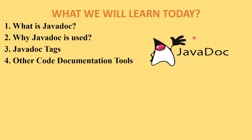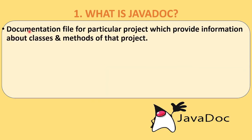Javadoc code documentation tool is used only in the Java programming language, to generate the Java documentation for Java code. Similarly, we have code documentation tools for other programming languages as well. So what is Javadoc? It is a documentation file for a particular project, which provides information about classes and methods of that project. Suppose you have created a Java project inside Eclipse or NetBeans, any IDE where we can write Java code — for that Java project, we can generate a documentation file, which we call a Javadoc.